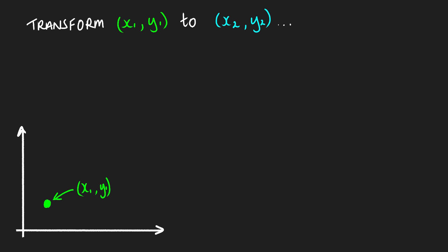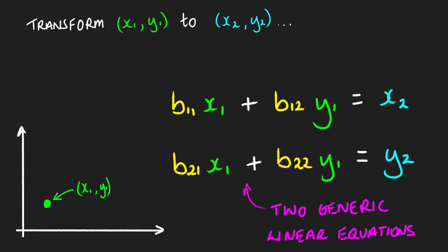So let's go back to our original point x1, y1. And we'll think of two generic linear equations that will transform that point onto x2, y2.